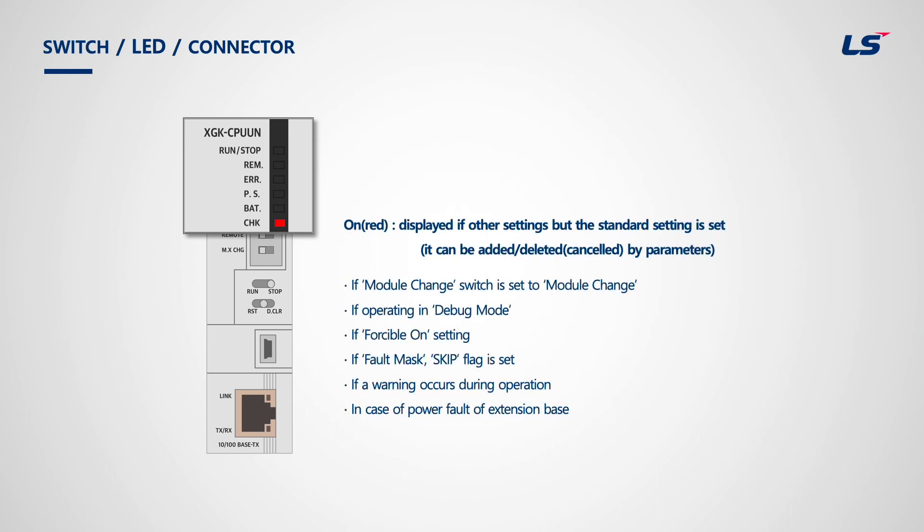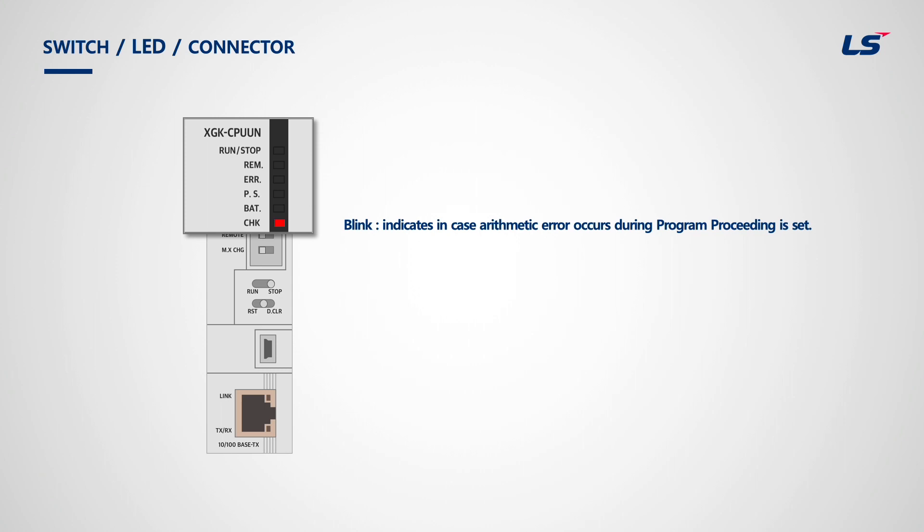Lastly, the Check LED is turned on if something needs to be checked — for example, if the module change switch is set, if operating in debug mode, if forcible on setting is active, if a fault mask skip flag is set, if a warning occurs during operation, or in the case of a power fault on an extension base. It does not mean the PLC is stopped just because the CHK LED is on. An error stops the PLC, where the CHK LED shows the cause for the error.